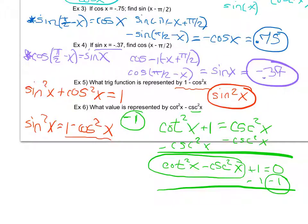Again, you won't have to memorize these other than sine squared plus cosine squared equals one, but you do need to recognize them — noticing that something looks like a co-function identity or a Pythagorean identity. Make sure you have all these written down or have the note sheet printed out so you can use it as a reference guide as you work through problems like these.